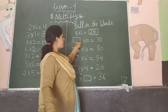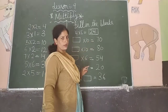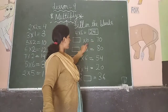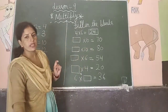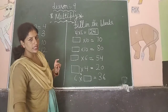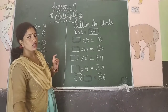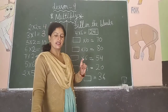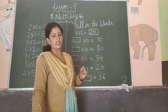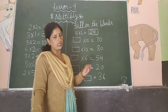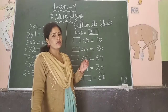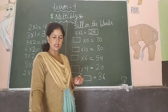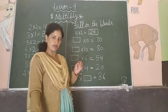Next is: blank multiplied by 10 equal to 70. The result is 70 and one number is 10. You need to say the table of 10 until you reach 70. So: 10 ones are 10, 10 twos are 20, 10 threes are 30, 10 fours are 40, 10 fives are 50, 10 sevens are 70.